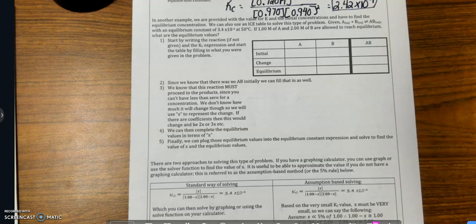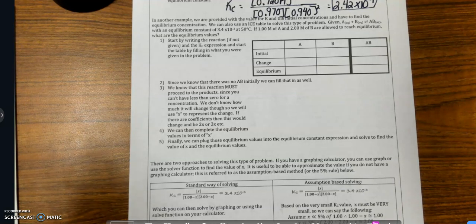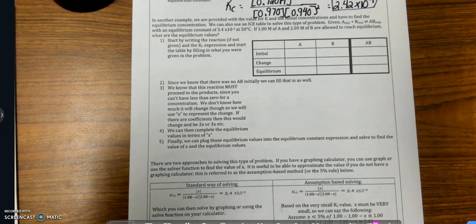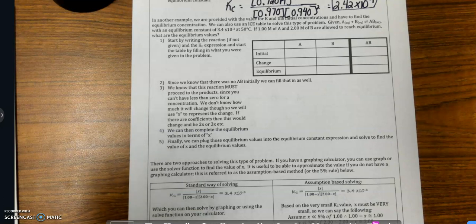All right, so let's work another problem. The last one was pretty straightforward. The way that we got to K was that we knew one of the equilibrium concentrations of our product, and so we could solve for X in that way. Let's try this next one.